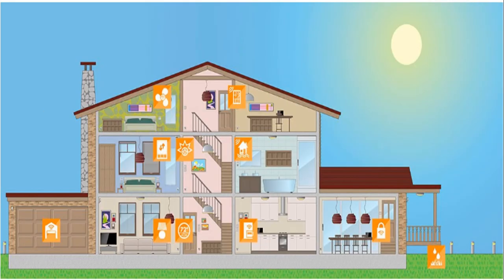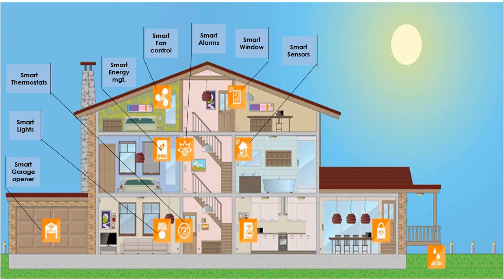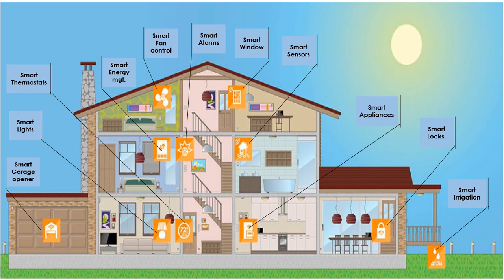Z-Wave has a large selection of smart products available across widely recognized brands, allowing you to create your ideal smart home. There are smart door locks, smart indoor and outdoor lights, smart energy, smart fan controls, smart alarms, smart windows, smart sensors, smart appliances, smart locks, and smart irrigation. There are limitless ways to use a smart home — it can include shutting off your water in case of a water leak, turning on the lights to make it look like you're home if smoke is detected, or talking with your dog while you're away.